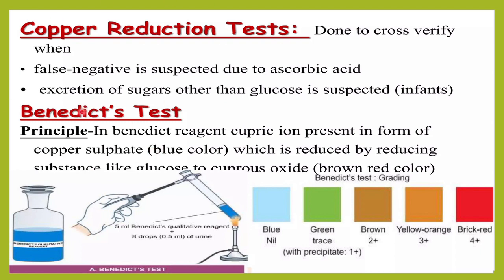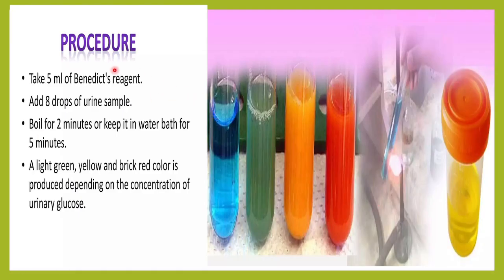The Benedict's test is a copper reduction test used to confirm glucose presence. Earlier it was routinely done, but nowadays we mostly use the reagent strip test; however, when there is doubt we do the Benedict's test. The principle is: Benedict's solution contains cupric ions, and if glucose or any reducing substance is present in the urine, it reduces the cupric ions to cuprous oxide, producing a color change.